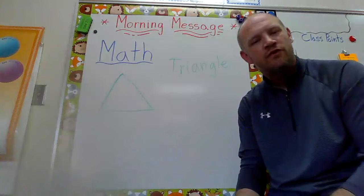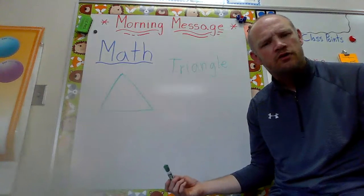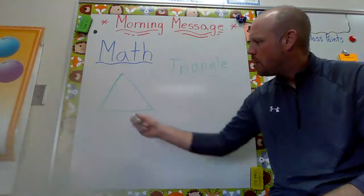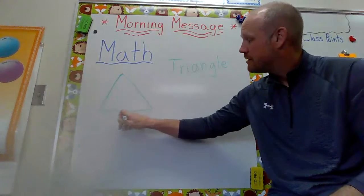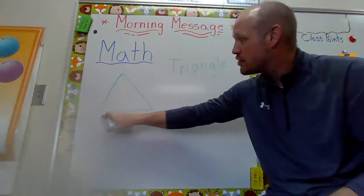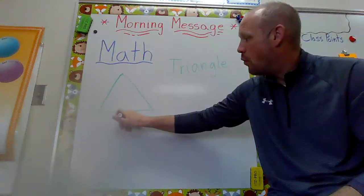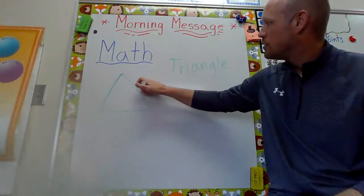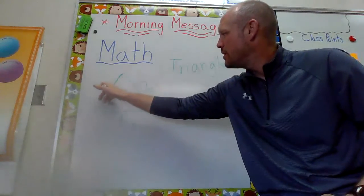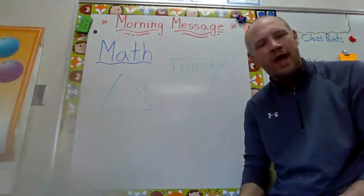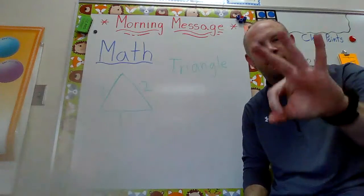So what's different about a circle and a triangle and a square? Well the triangle has, let's count them, how many sides? Remember your sides are your straight lines. One, two, three. Good job. So every triangle has three sides.